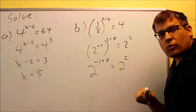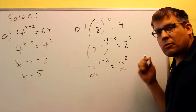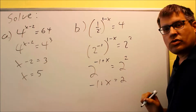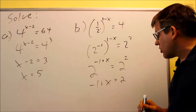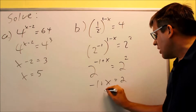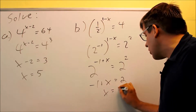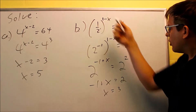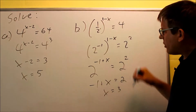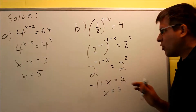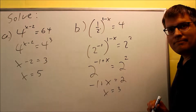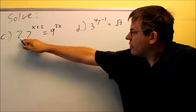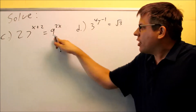The bases are now equal, so I use the equal basis property and set the exponents equal: negative 1 plus x equals 2. Adding 1 to both sides gives x equals 3. Putting 3 in makes the equation correct, and both problems are now solved.